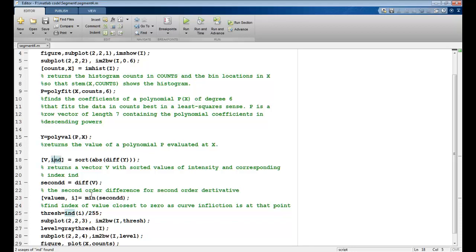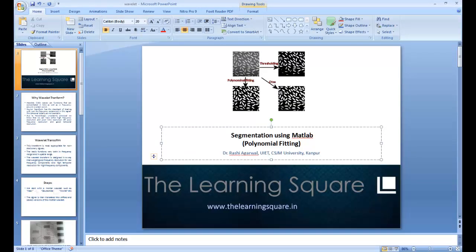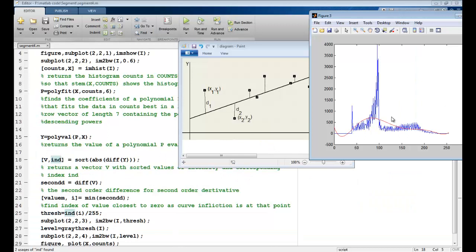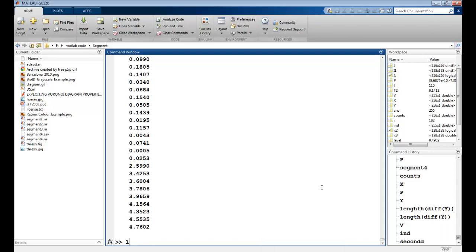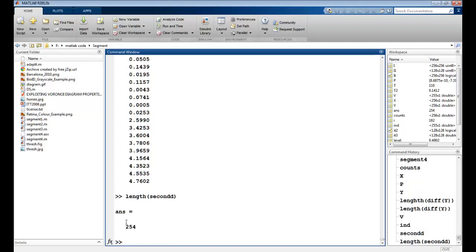Now, if I want to find out the minimum of any curve, if I want to find out the minimum value of any curve, we know that the second differentiation is generally taken to be 0 at the point of inflection. So I take the second derivative by taking yet another difference of this vector v. So again, when I do this, you can see second derivative and the length of second derivative should be 254, which is again 1 less than the previous one.